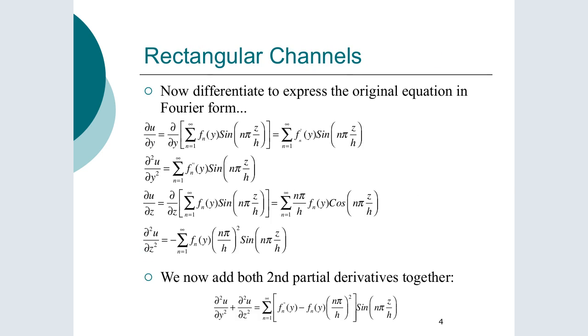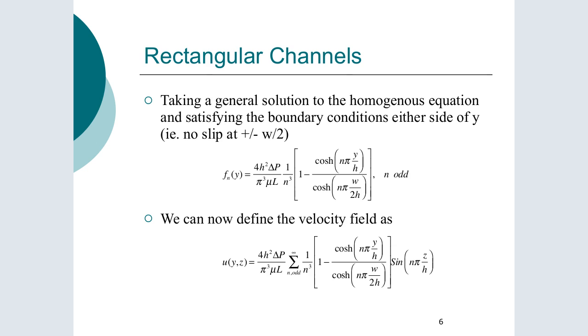So in essence what we get out of this if we just go forward is we've got a solution here for the velocity distribution. It looks pretty complex but what it has is essentially the core features that you'd see in fully developed flow for a pipe or a parallel plate. So again we see this delta P over mu L term, we've got H squared and then in this section here what we have is essentially geometric features: W over 2H, Y over H, the coordinates set up in H here.